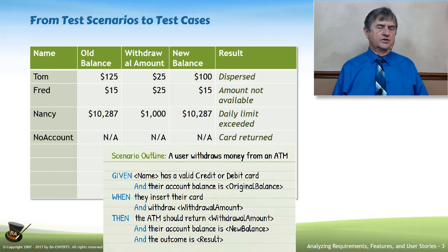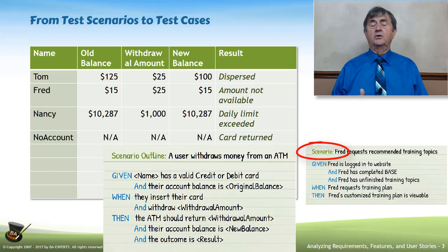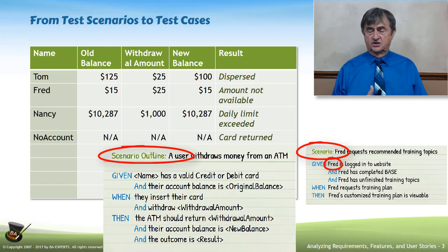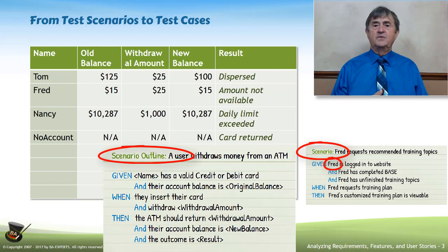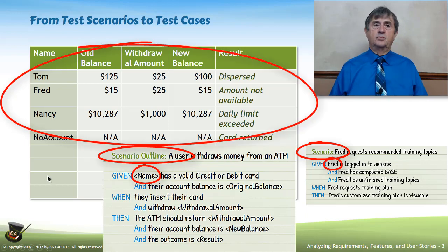That's the whole idea behind Gherkin. The two constructs we're interested in for this section are the test scenario and the scenario outline. A test scenario has constants and no variables at all. A scenario outline has variables that are going to be filled using an example table following the word 'example' in Gherkin. That's the way we're going to be talking about these test scenarios.